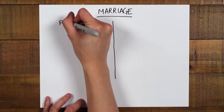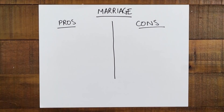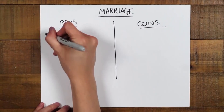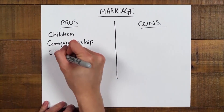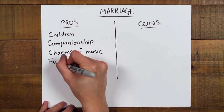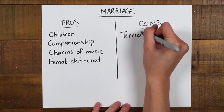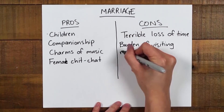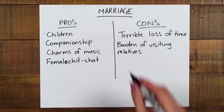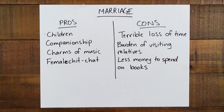When Charles Darwin was deciding whether or not to propose to his cousin Emma Wedgwood, he had a rather interesting approach. He drew up a list of pros and cons. As pros, he listed things like children, companionship, and the charms of music and female chitchat. And as cons, he listed things like terrible loss of time, the burden of visiting relatives, and having less money to spend on books.